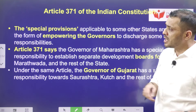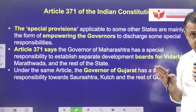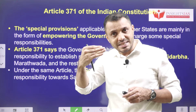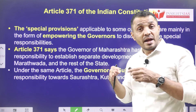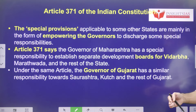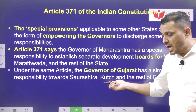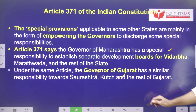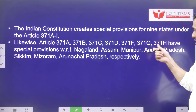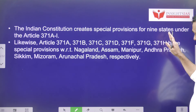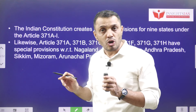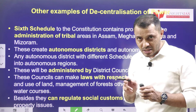Next, Article 371 gives asymmetric federalism to various states, with sub-clauses from Article 371-A to Article 371-I, providing different special provisions to different states. For example, Article 371 provides special provisions to the Vidarbha region in Maharashtra as well as regions such as Saurashtra and Kutch in Gujarat. Articles 371-I and 371-J deal with special provisions related to Goa and Karnataka respectively. This is the second type of asymmetric federalism.